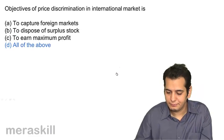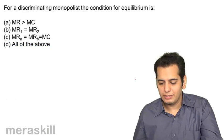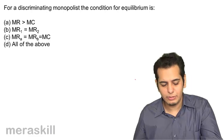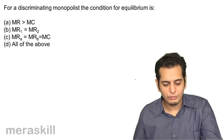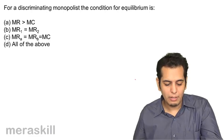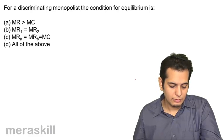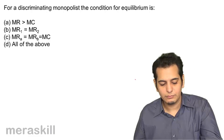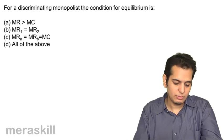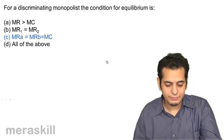For a discriminating monopolist, the condition for equilibrium is: a) MR should be greater than MC, b) MR1 should be equal to MR2, c) MRa should be equal to MRb should be equal to MC, d) all of the above. The answer is c).